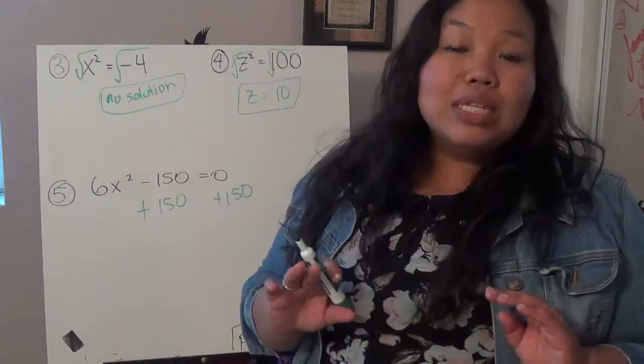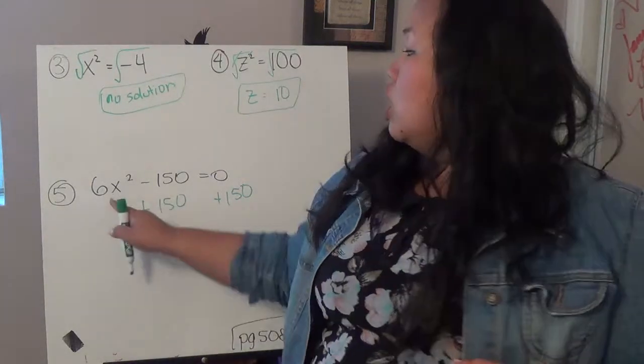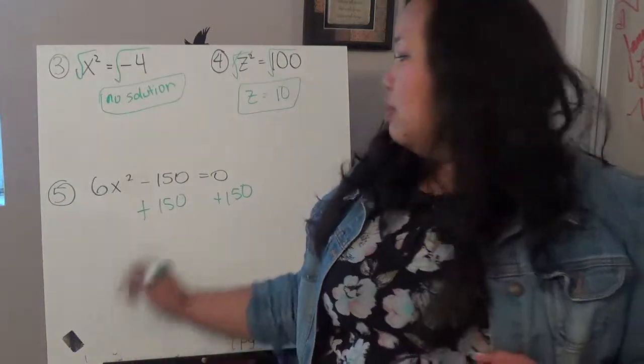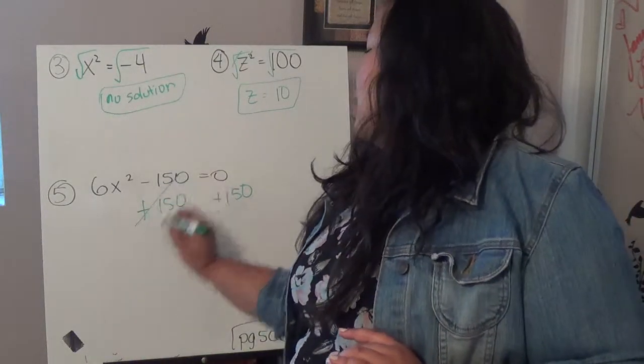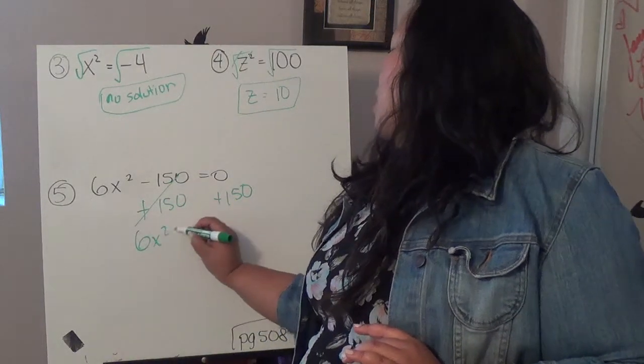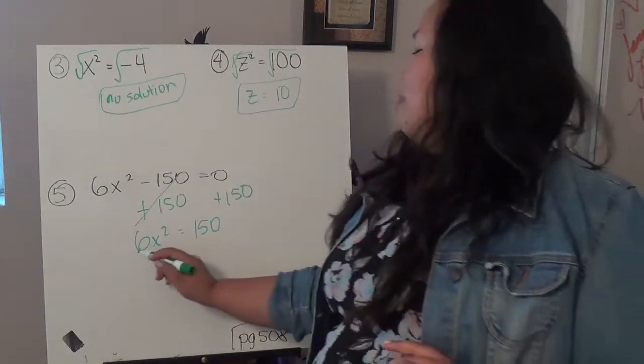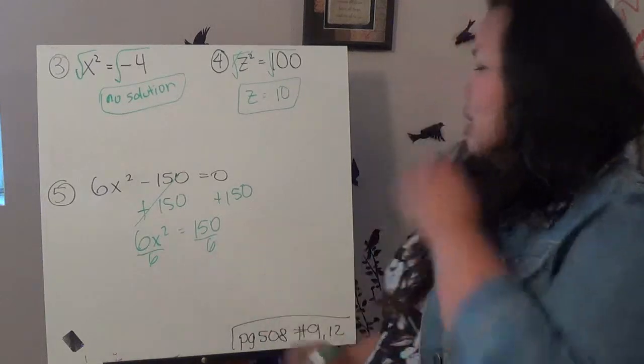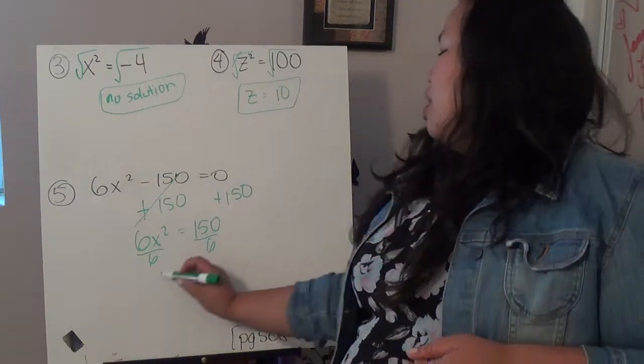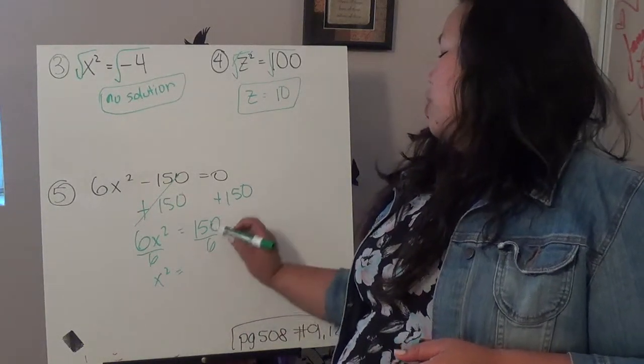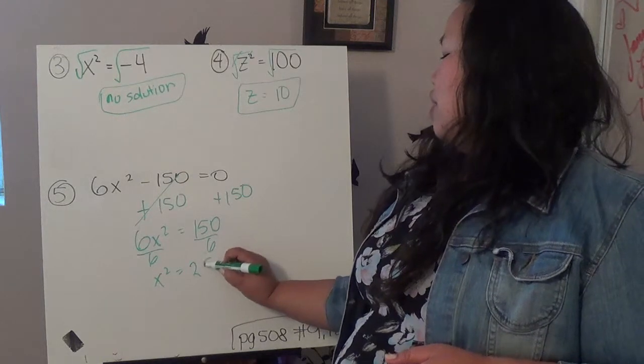So, I'm doing the same steps that I would if I was just trying to solve for an x. So, these cancel out, I end up with 6x squared equals 150. Now, I'm going to divide by 6.